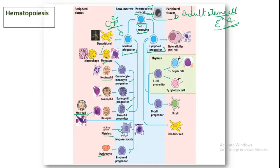Monocytes are undifferentiated cells circulating in blood. When a monocyte enters a tissue — for example the liver — it differentiates and is then called a macrophage. Monocytes can also differentiate into dendritic cells. Both dendritic cells and monocytes are antigen-presenting cells. Notably, dendritic cells can come from both the myeloid progenitor and the lymphoid progenitor.